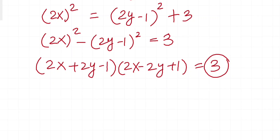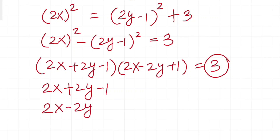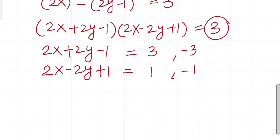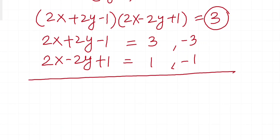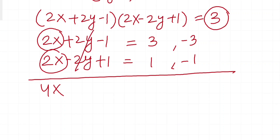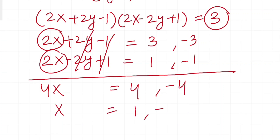The possible factor pairs for 3 are: (2x + 2y - 1) and (2x - 2y + 1) equal to 3 and 1, or -3 and -1. Adding these two equations: the 2y terms cancel, giving 4x = 4 or 4x = -4, so x = 1 or x = -1.